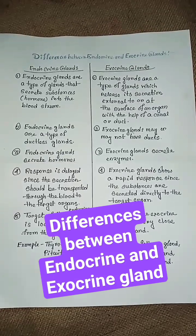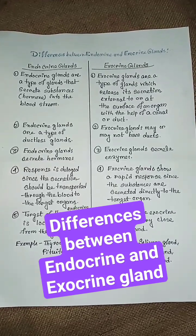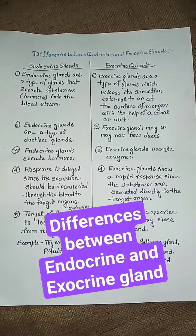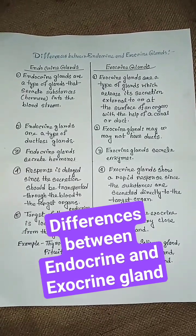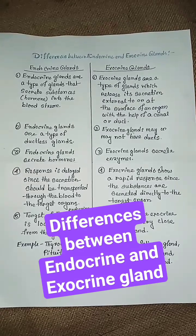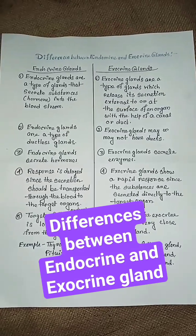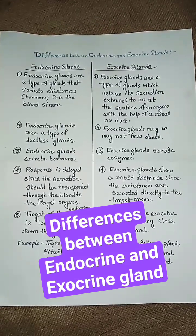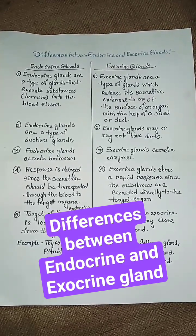Examples of endocrine glands are thyroid glands, pituitary, and adrenal glands. Examples of exocrine glands include the salivary gland and gastric glands.